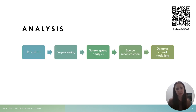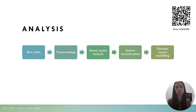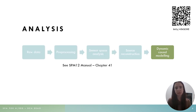When we record EEG data we first have to pre-process it, and often we have to do a sensor space analysis before we can model it with DCM. This is because we need to identify some effects that we can then explain with dynamic causal modeling. It's also a good idea to do a source reconstruction so that we know which brain regions we want to include in our model. In this case we're lucky because we have already pre-processed data and the sources for the MMN have been very well established in the literature, so we're only going to be doing the DCM part of the analysis.